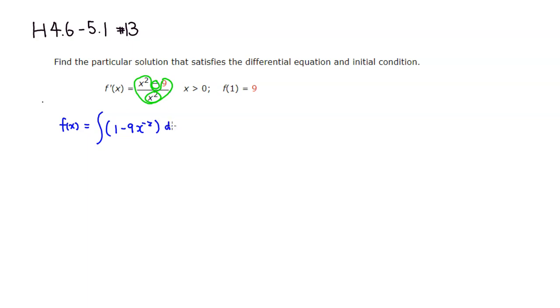Let's find the antiderivative here. This is going to be equal to - antiderivative of 1 would be x, that's easy. Negative 9 is just a constant multiple, so I leave that. Add 1 to the power, so it's negative 2 plus 1 is negative 1.